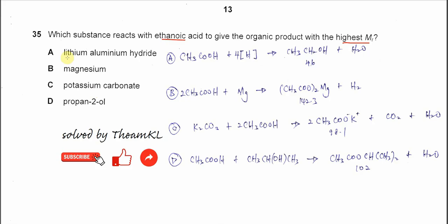For the lithium aluminium hydride with the ethanoic acid, we know that lithium aluminium hydride can reduce the carboxylic acid to the alcohol. So carboxylic acid here is the ethanoic acid, it will reduce to the ethanol. So the ethanol mass is 46 only.